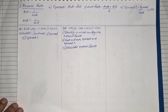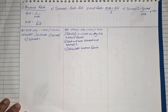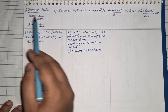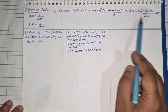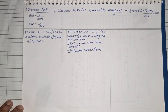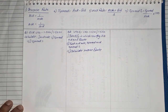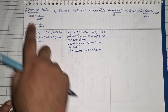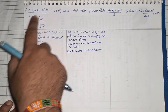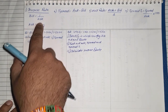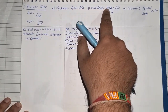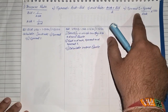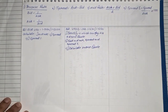Let us see how to solve sums in which they have asked you to find the inverse rate, the spread, mid rate, and spread percent — these are the four new formulas. The formula for inverse rate: bid is equal to one upon ask rate, and ask rate is equal to one upon bid. Spread is ask minus bid. Mid rate is ask plus bid divided by two. Spread percent is spread upon ask into 100.